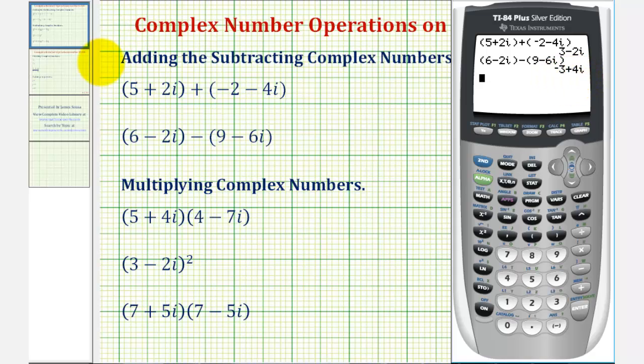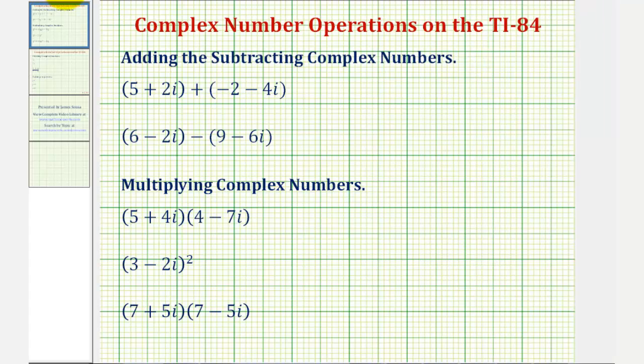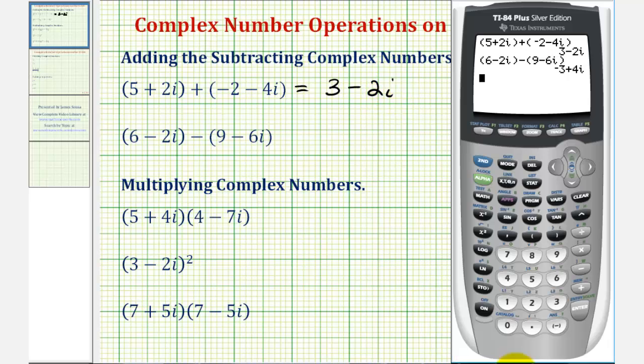So again, the sum is three minus two i, and the difference is negative three plus four i.